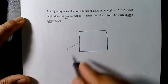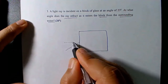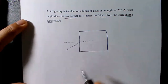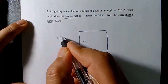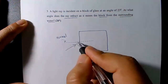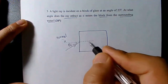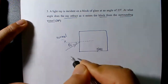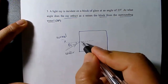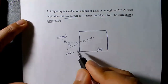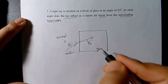Here's the incident ray, and to measure the angle of incidence you have to draw an imaginary normal to the surface — this is called the surface normal. We measure all angles in Snell's law with respect to this normal, so this is theta_I, the angle of incidence. Since glass has a higher index of refraction surrounded by water, it bends towards the normal going from lower to higher index.